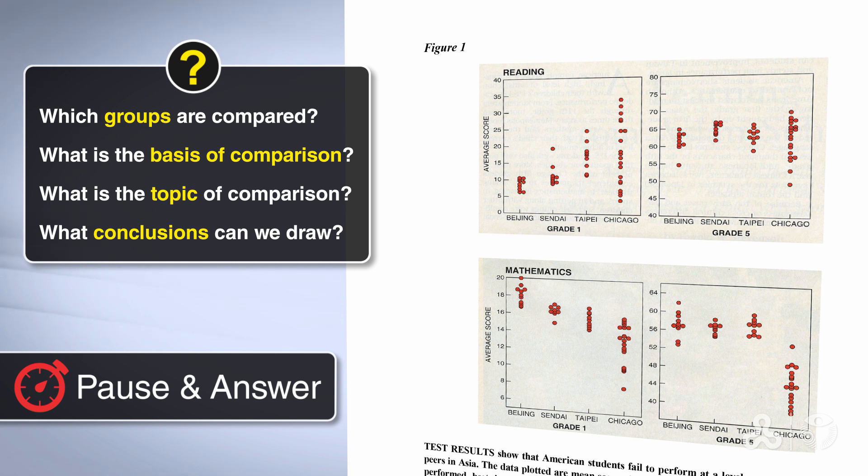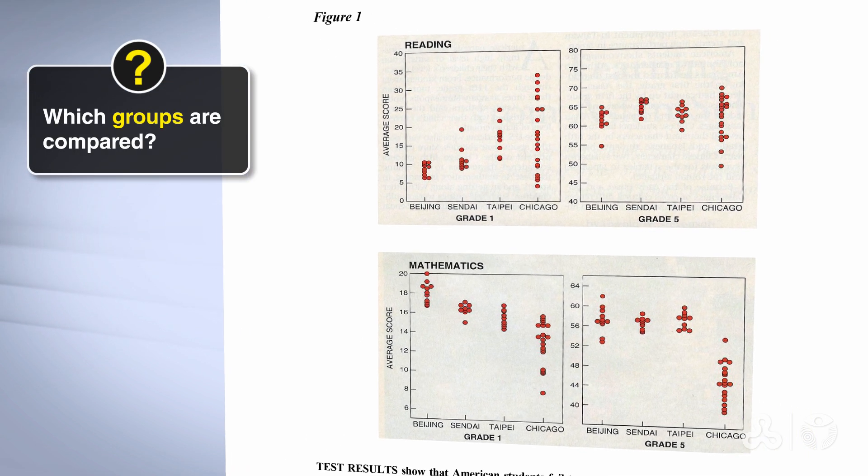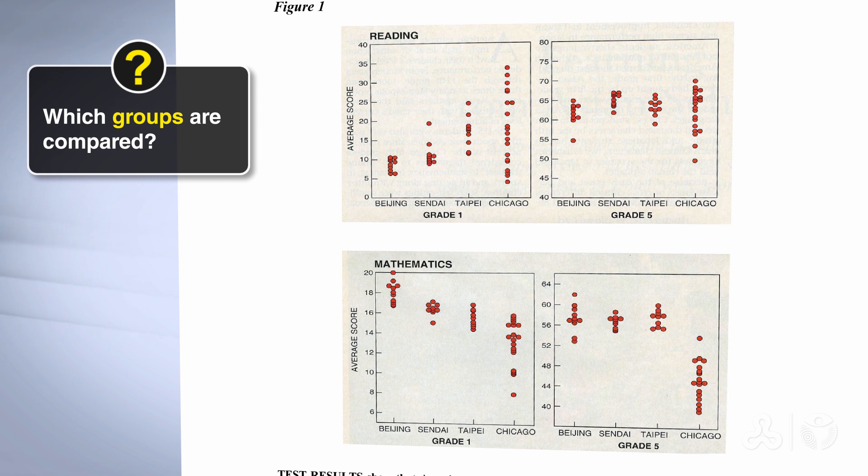Okay, let's answer those questions. Let's look at the graphs and answer who is compared. We see that in all of the graphs we have grade one and grade five, but we're not comparing grade one to grade five. We're comparing Asian students and American students in grade one and in grade five. The study focuses on four cities: Chicago, Taipei, Sendai, and Beijing.